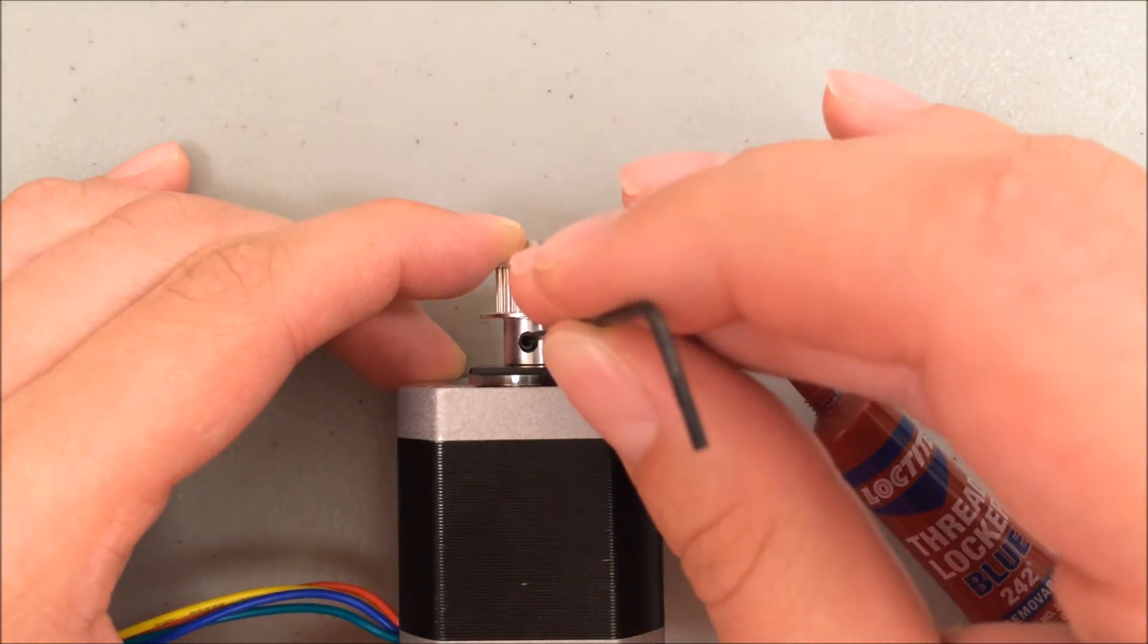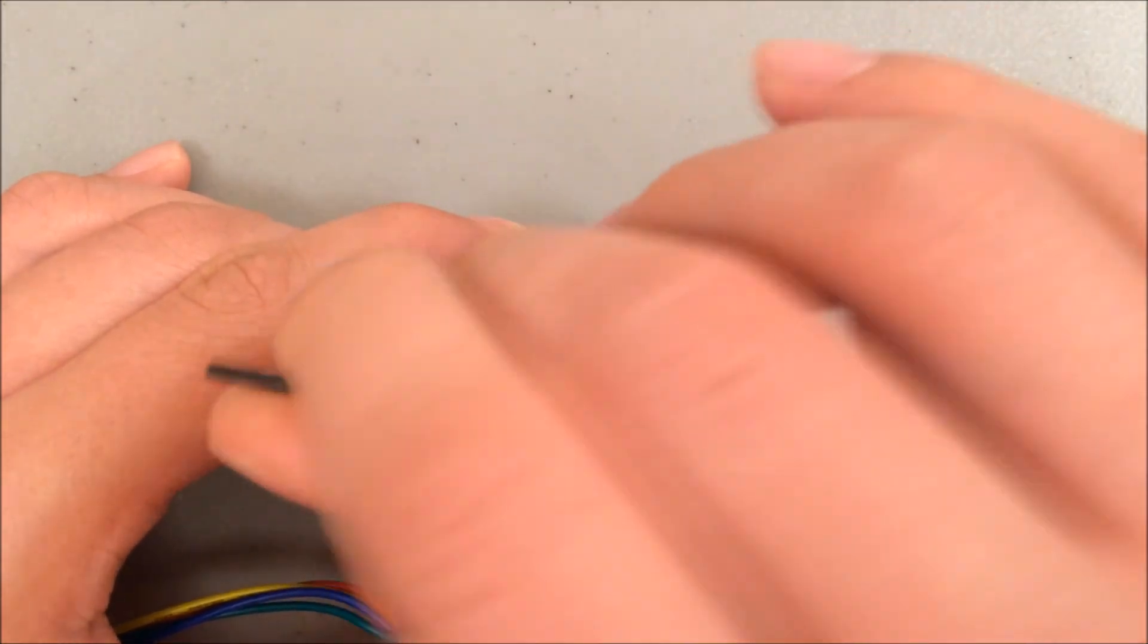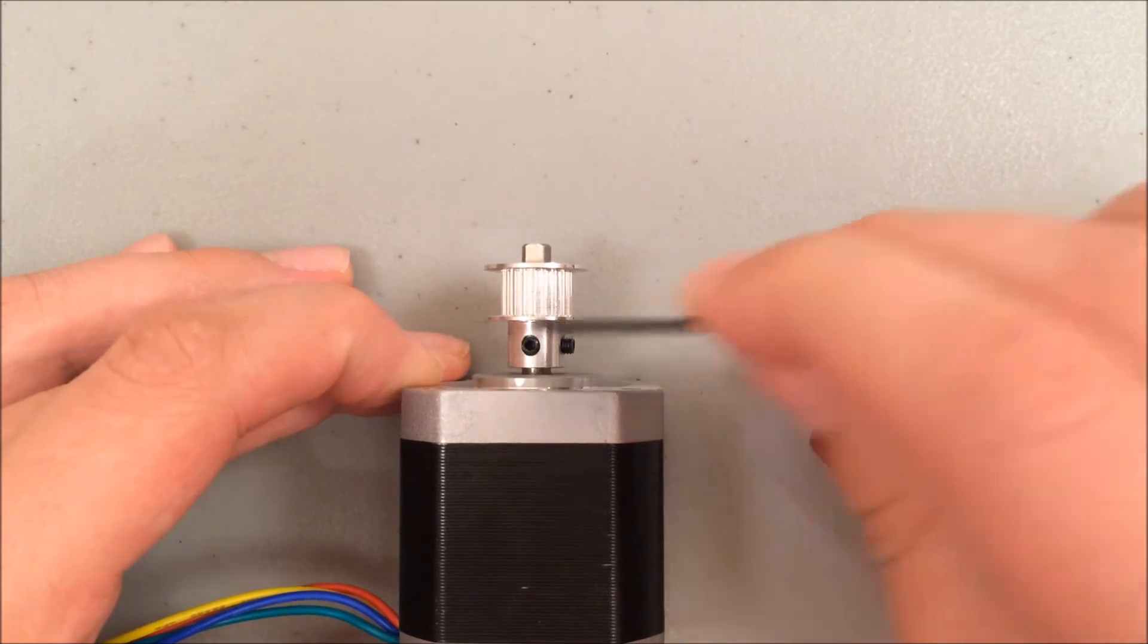Take the allen wrench and tighten one of the set screws, preferably the one touching the flat side of the motor shaft. That'll hold the pulley in place so I can remove the spacer.